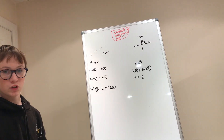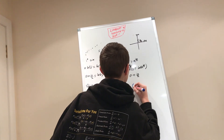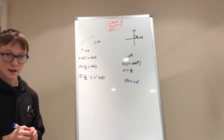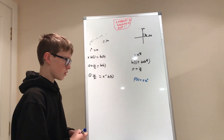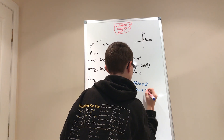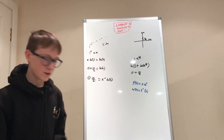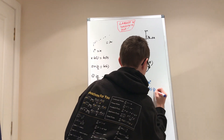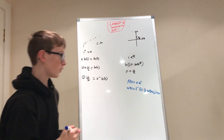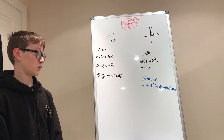Now I have to introduce the Lambert W function. Say we have some F of X equal to X times e to the power of X. Then the Lambert W function of F of X just equals X. So if we can get some expression of the form X times e to the power of X, we can use the Lambert W function to isolate the X.